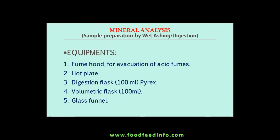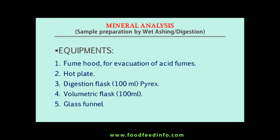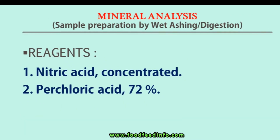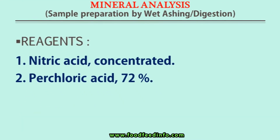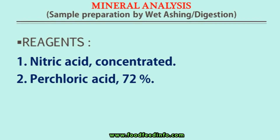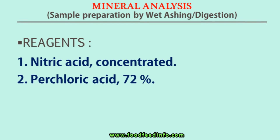To perform wet digestion we need a fume hood for the evacuation of acid fumes. We need a hot plate and a digestion flask of 100 ml capacity, a 100 ml volumetric flask, and a glass funnel. The reagents used in this experiment are nitric acid and perchloric acid. The nitric acid should be concentrated and the perchloric acid should be of 72%.